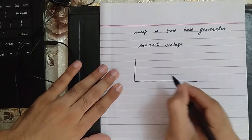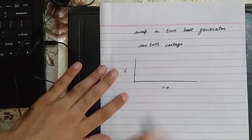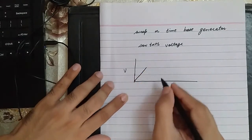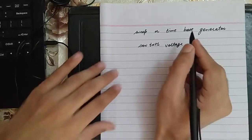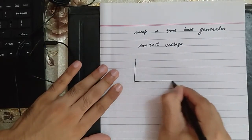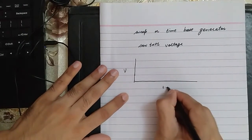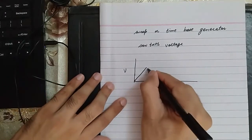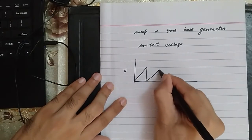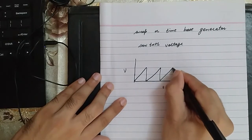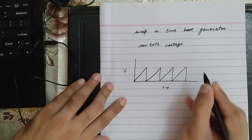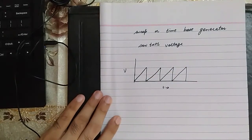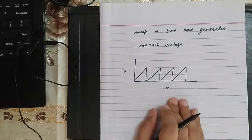If we see its waveform: this is voltage and here is time. It increases linearly with time and then suddenly goes back to zero. Then it increases linearly with time and suddenly goes back to zero again — increases, goes back to zero. So if you see, this waveform is like the teeth of a saw. That is why it is known as saw-tooth voltage.